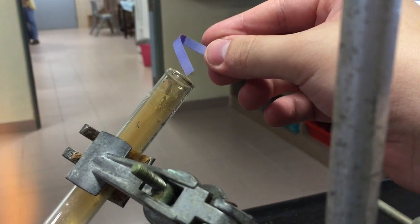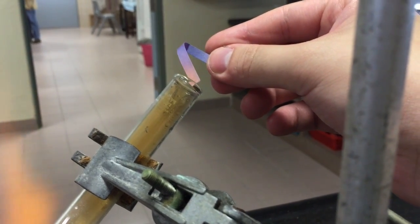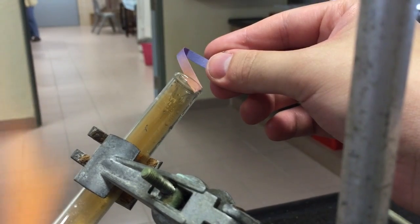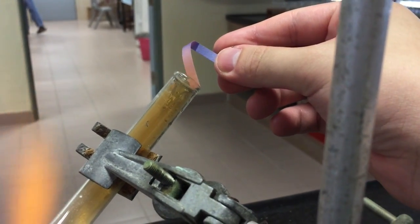Place a moist blue litmus paper near the mouth of the test tube to test for the presence of an acidic NO2 gas. Notice how the blue litmus paper turns red.